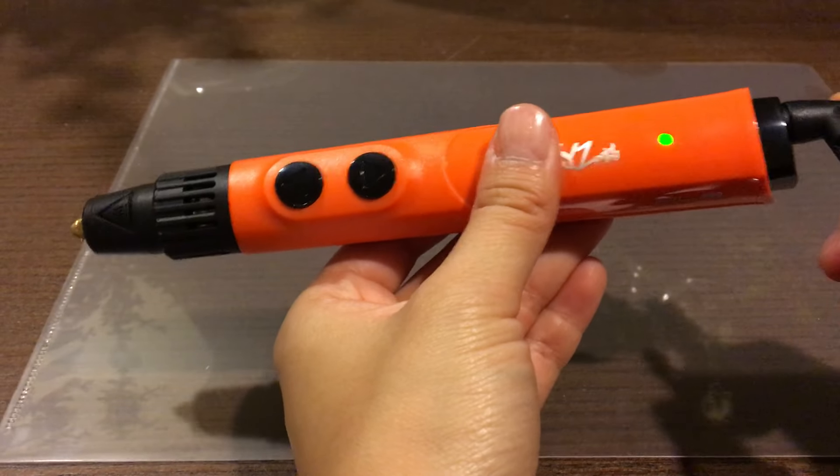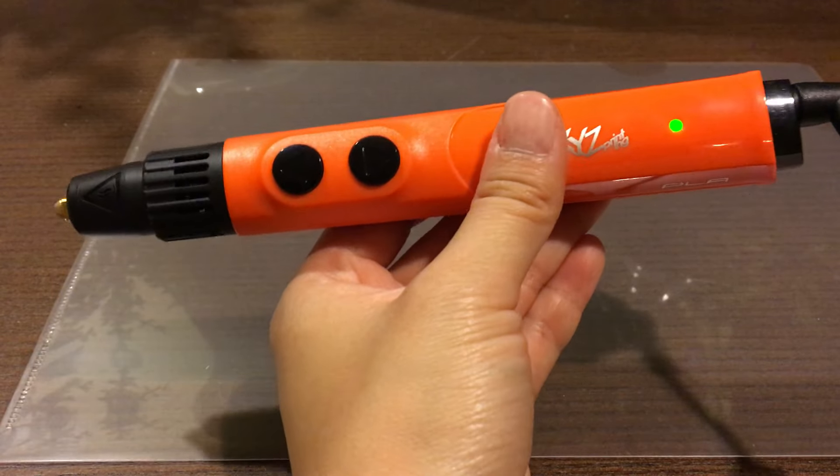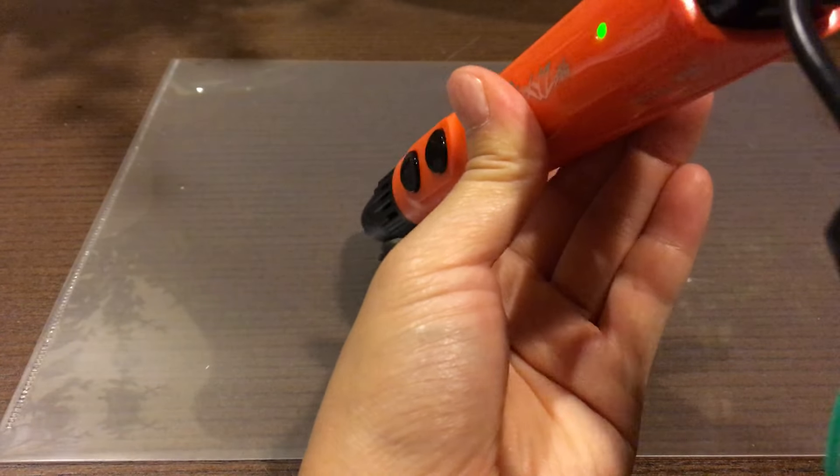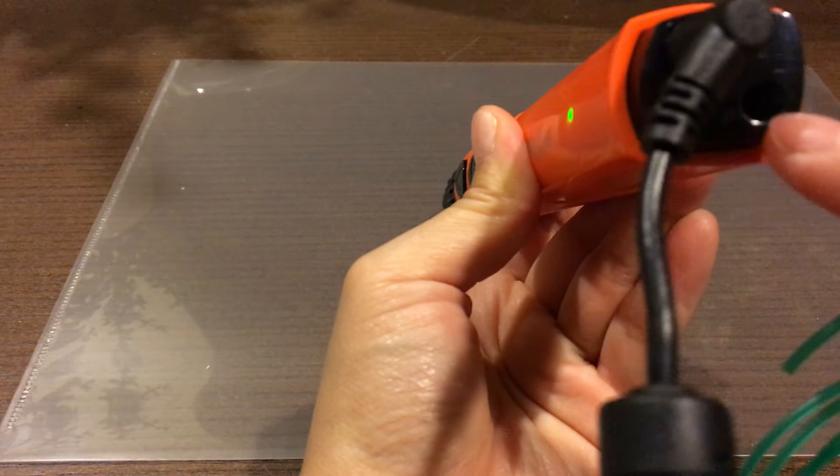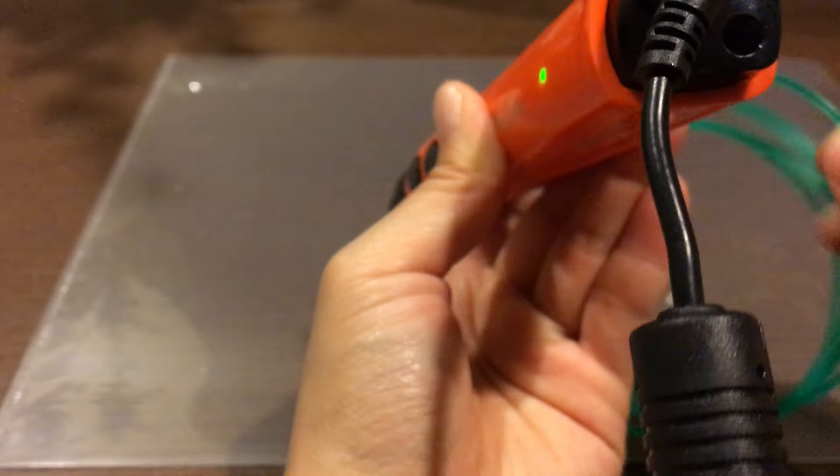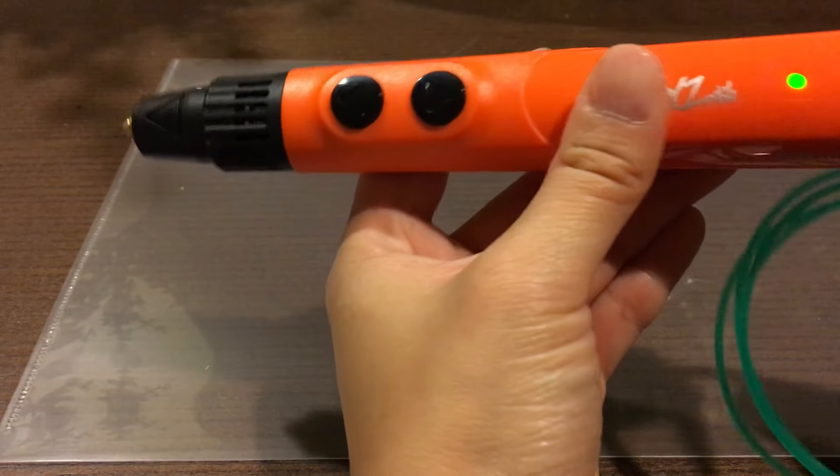All right, the light just turned green, so now let me put the filament in. It's pretty easy and straightforward. There is a hole in the back. You would just insert the filament in.